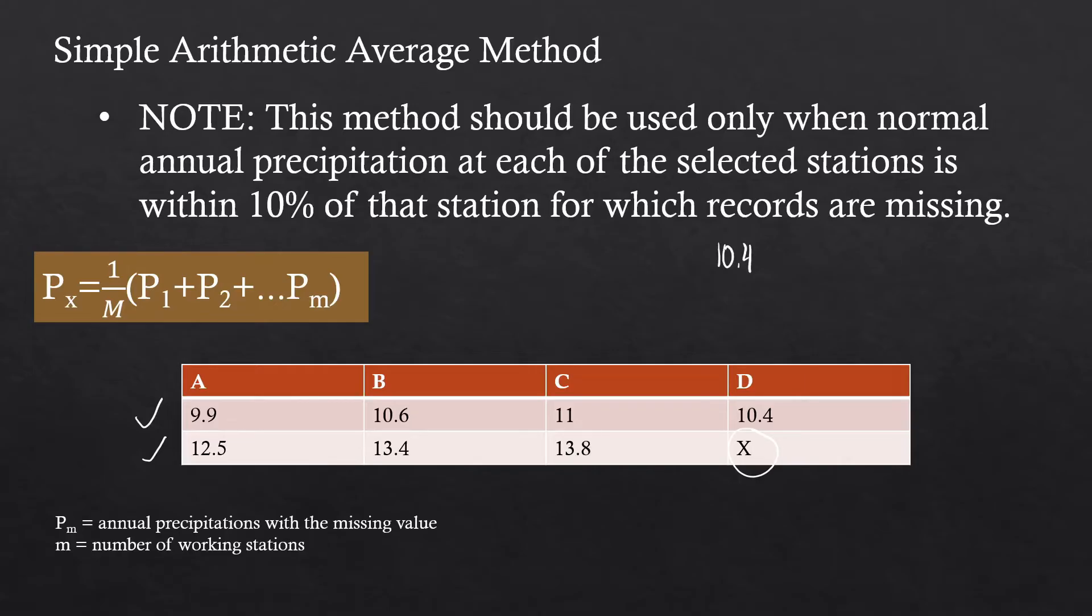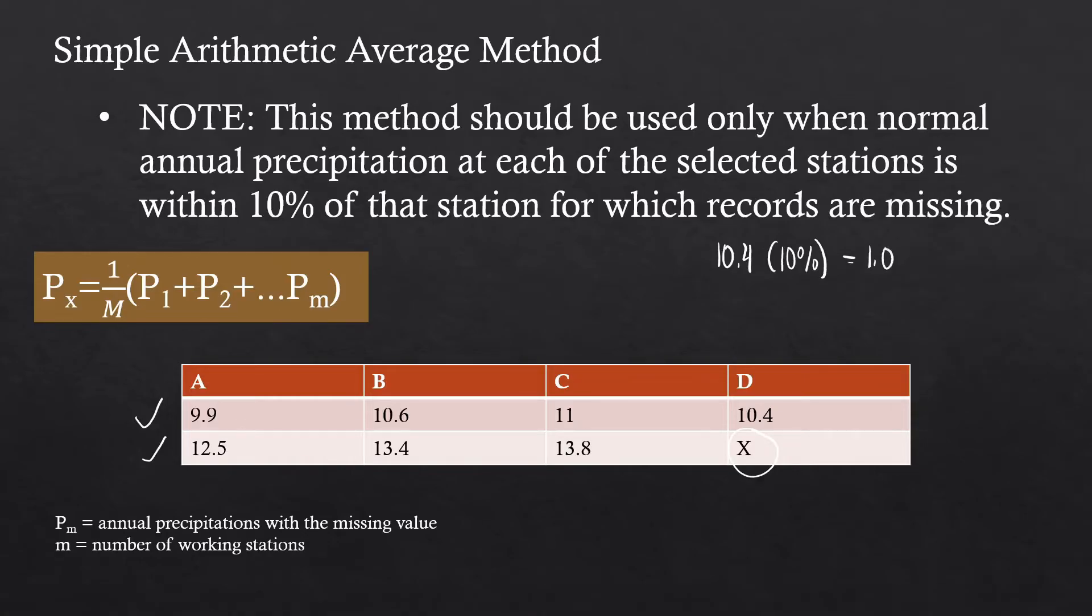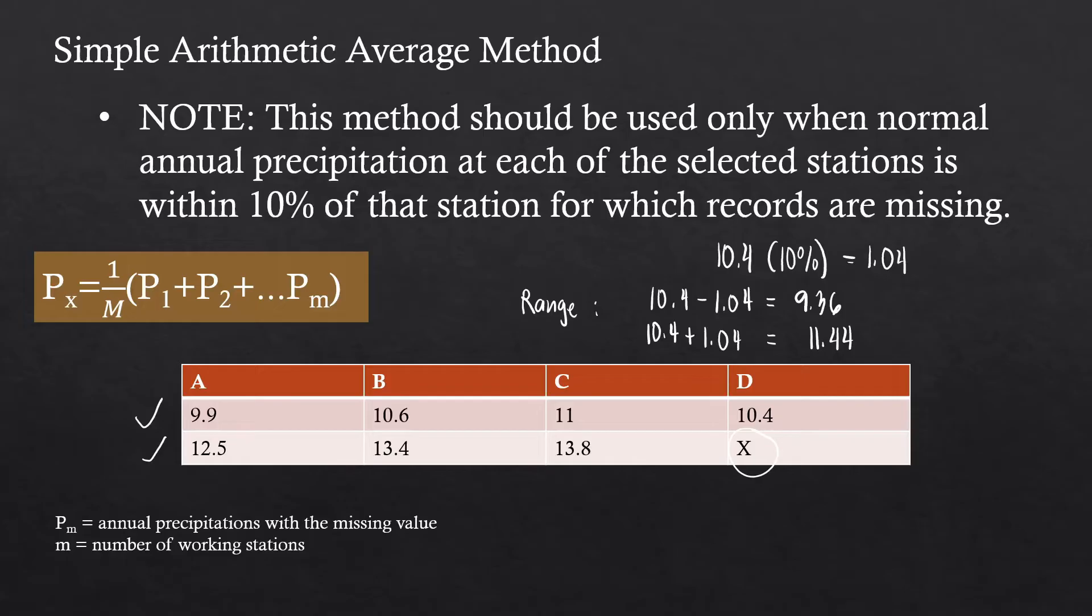Now, to get the range of values that the other stations should belong to, we multiply this value by 10%, and our range will be plus minus 10% of this value. Multiplying by 10%, we have 10.4 times 0.1, which is 1.04. So our range will be from 10.4 minus 1.04 up to 10.4 plus 1.04, giving us 9.36 to 11.44. Now 9.9 is between these values, as well as 10.6, 11, and 10.4, which means we can actually use this method.